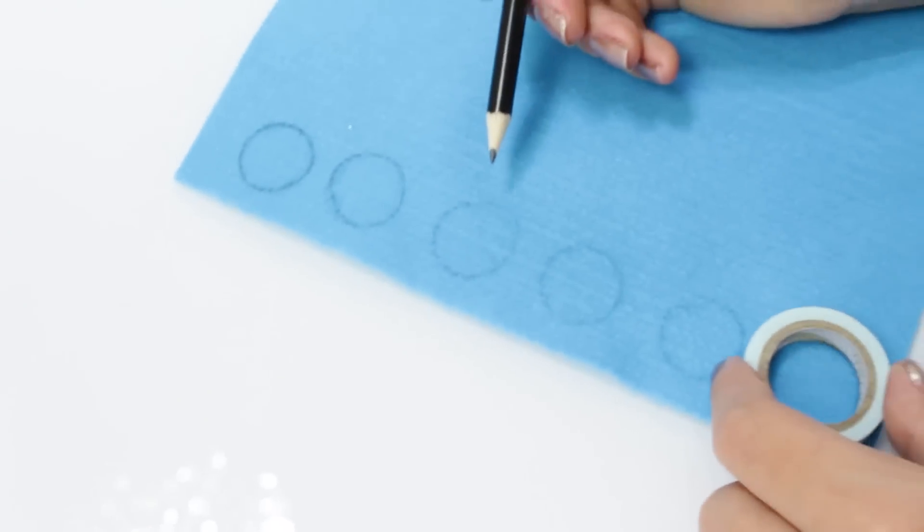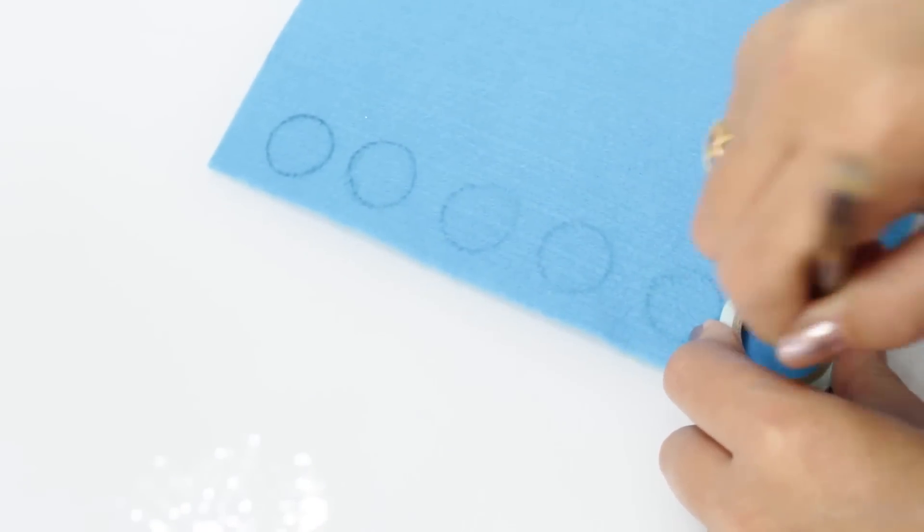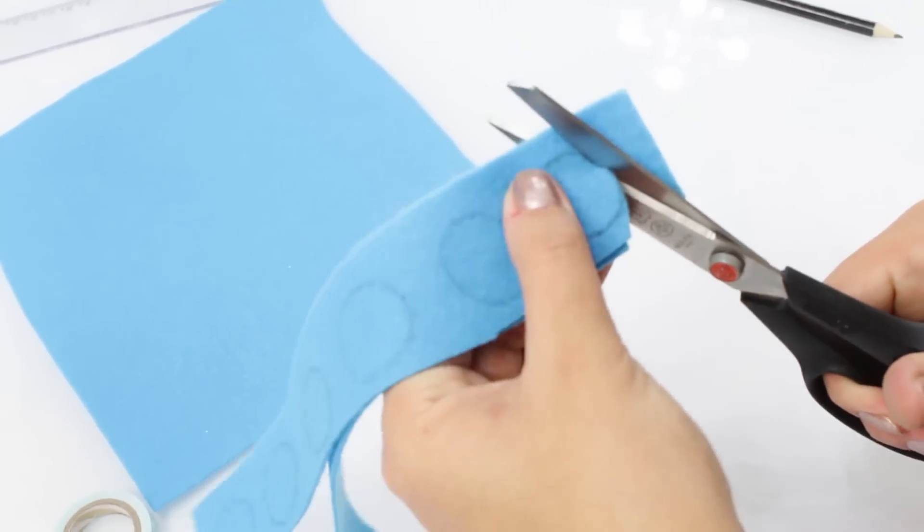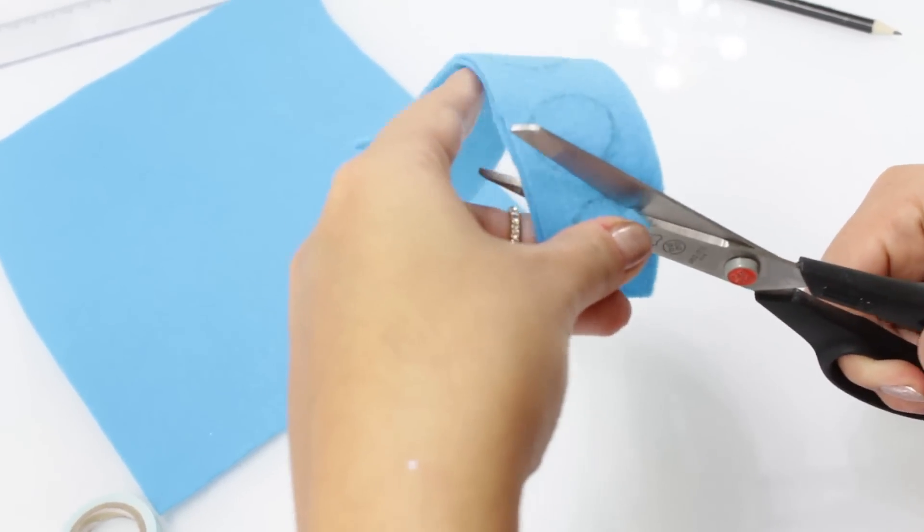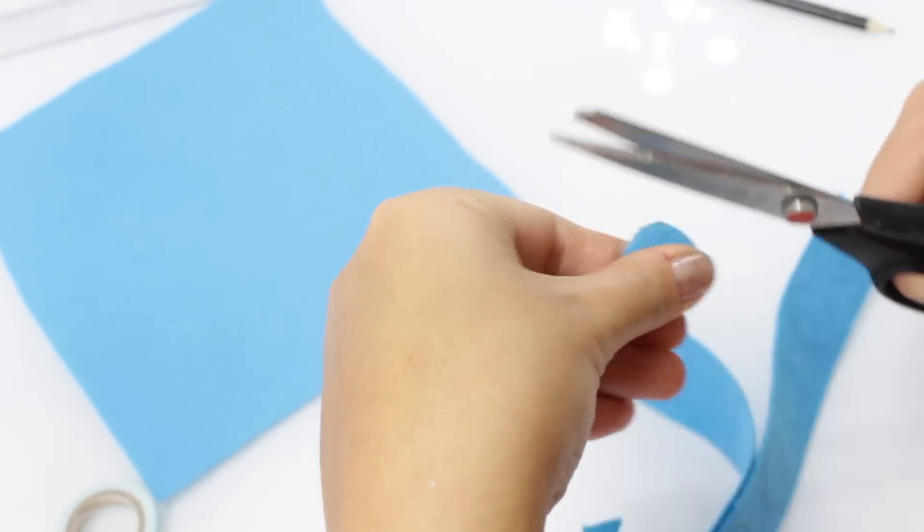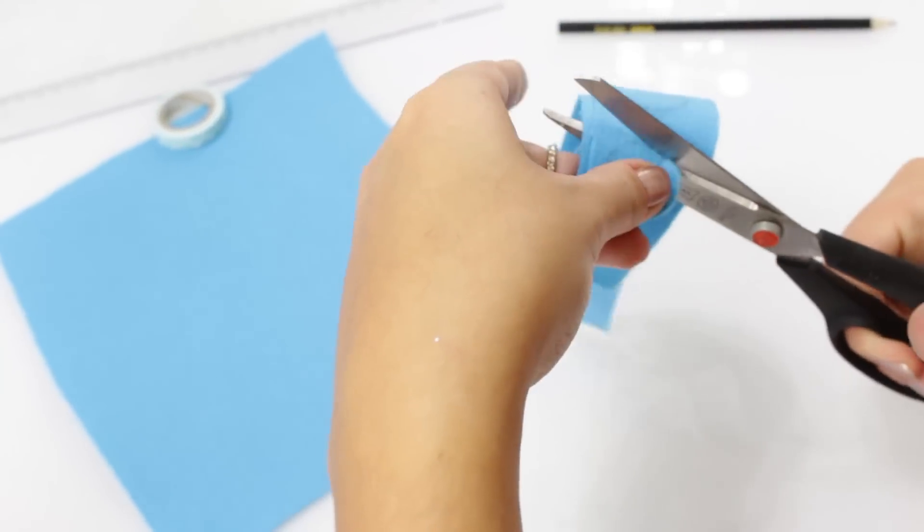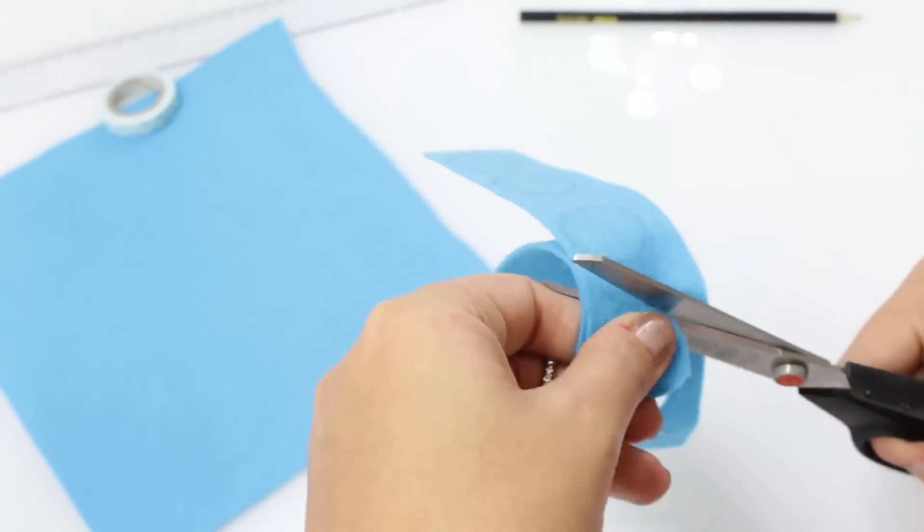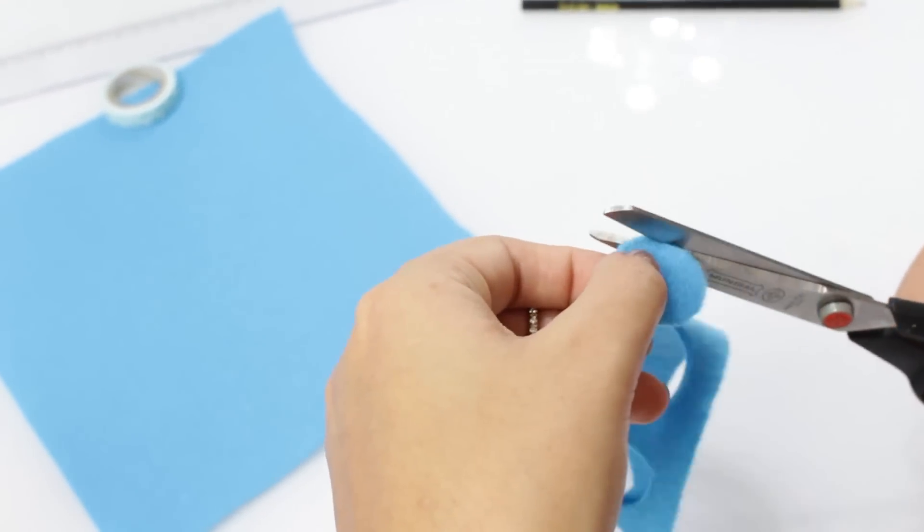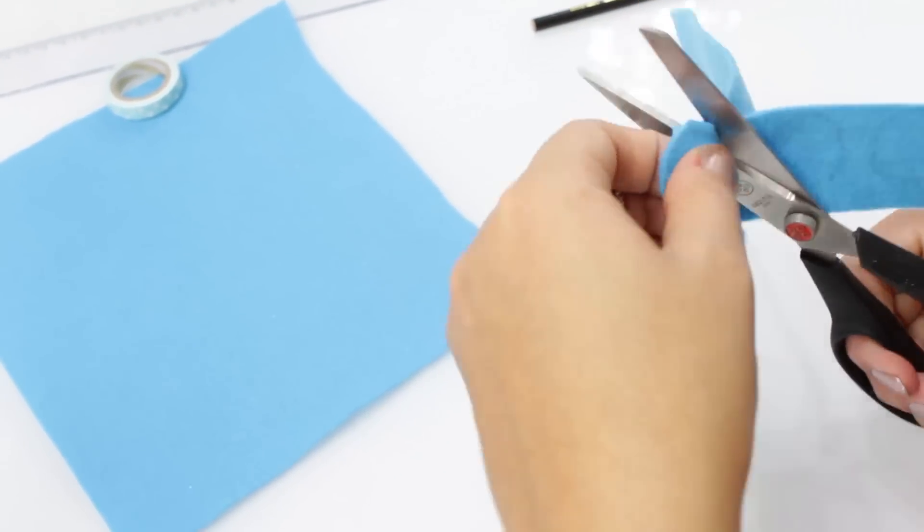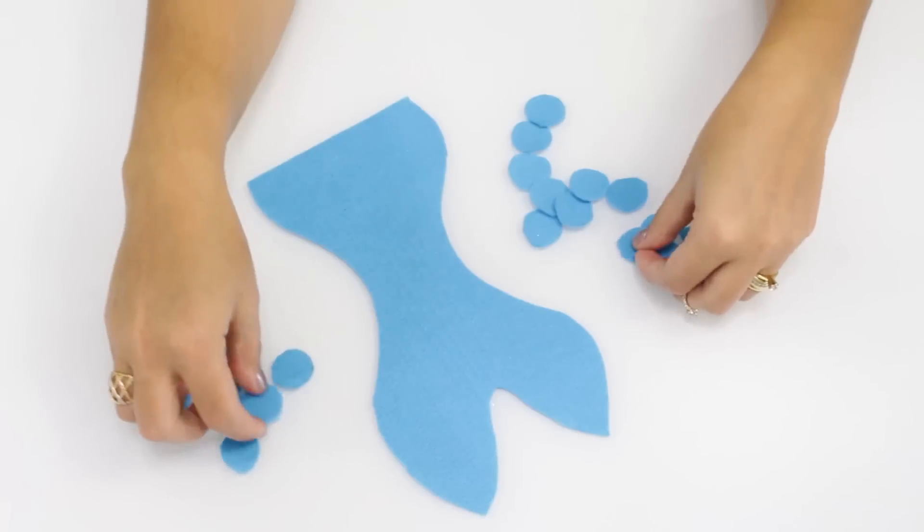Feito isso, agora eu vou pegar mais um pedacinho de feltro e eu vou começar a fazer os meus moldes de círculo. Dessa vez, como o estojo ele é um pouquinho menor que o caderno, eu usei a parte interna da minha fita adesiva pra poder usar como molde. E aí, mais uma vez, sem segredo, eu também peguei dois pedacinhos de feltro e fui recortando pra deixar um pouquinho mais rápido. As bolinhas são menores, como vocês puderam ver, porque eu usei a parte de dentro da fita adesiva. Então eu vou precisar de uma quantidade um pouquinho maior do que foi a quantidade de bolinhas do caderno.